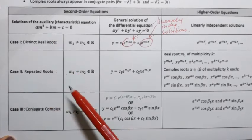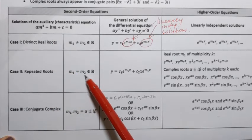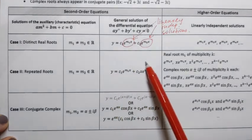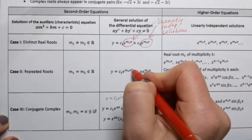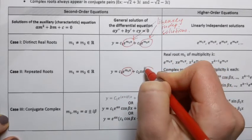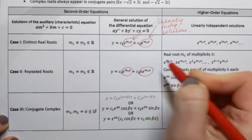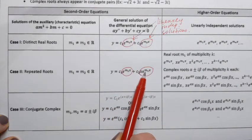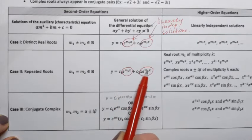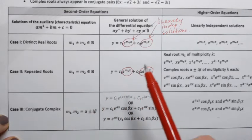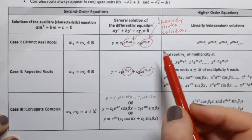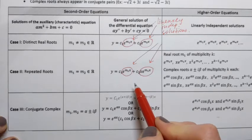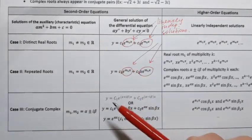Case two: when we have repeated roots for the quadratic equation — m1 equals m2 — the general solution looks like c1 times e^(m1*x) plus c2 times x*e^(m1*x). Here, e^(m1*x) and x*e^(m1*x) are the two linearly independent solutions. We reuse m1 since it's the same as m2, and form the general solution as a linear combination.